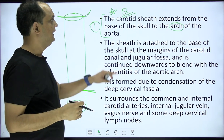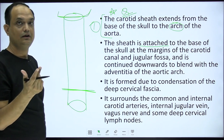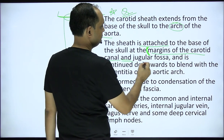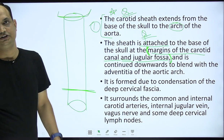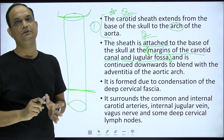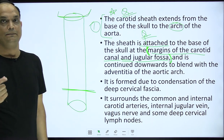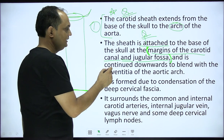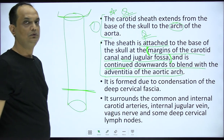The sheath is attached at the base of the skull more specifically along the margins of the carotid canal and the jugular fossa. That is the upper attachment of the carotid sheath. Looking at the downward attachment, it continues downward and blends with the adventitia of the aortic arch. These are the two important attachment points you should know.